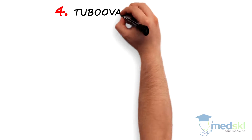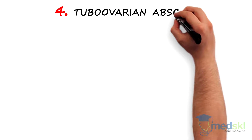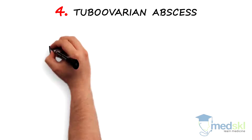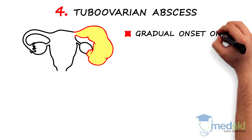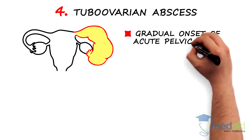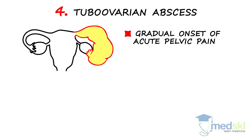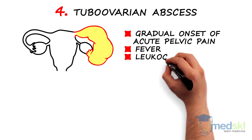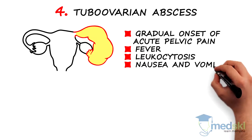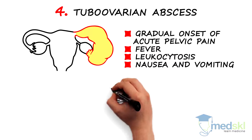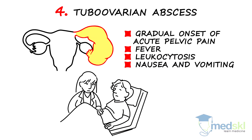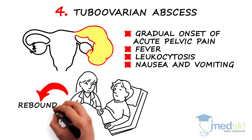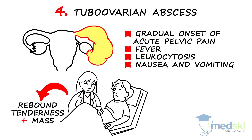Number four: tubo-ovarian abscess. Think of this if your patient has a gradual onset of acute pelvic pain with fever, leukocytosis, nausea, and vomiting. Clinical examination will reveal cervical motion tenderness and adnexal fullness or mass.